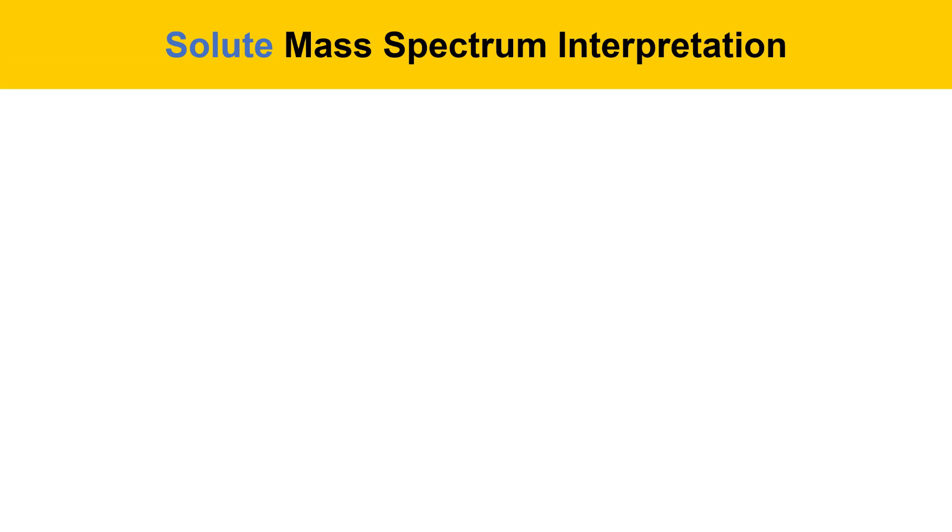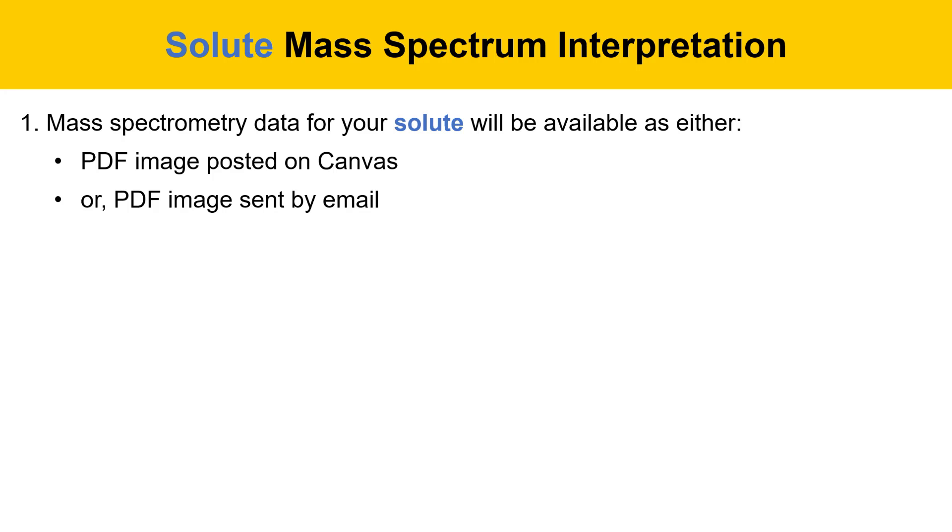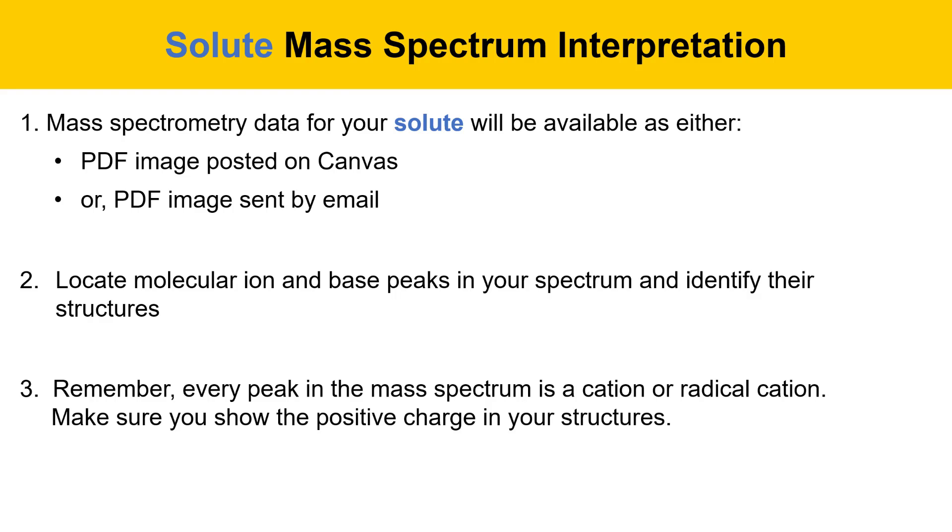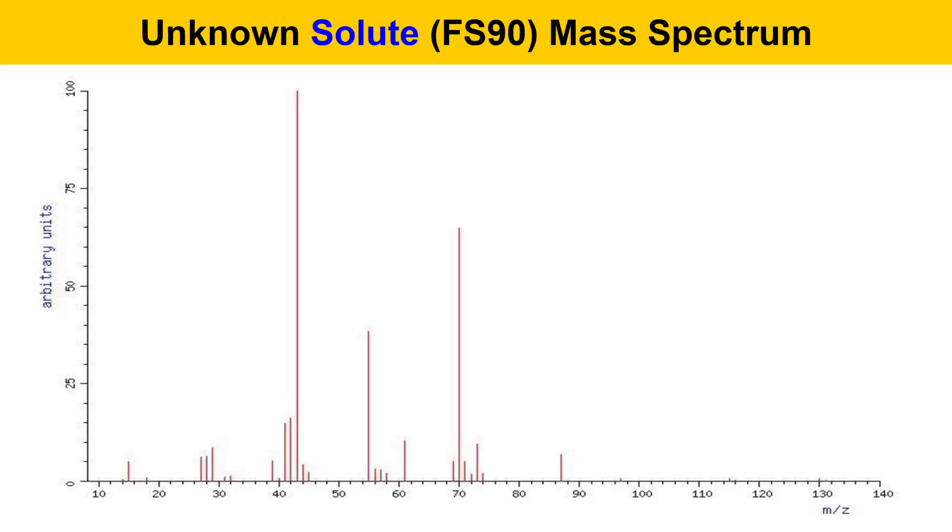Now we'll move on and talk about solute mass spectrum interpretation. Mass spectrometry data for your unknown solute will be available to you either as a PDF image posted in canvas or as a PDF image sent to you by email. When you get your unknown mass spectrum, you should locate the molecular ion and the base peaks in your spectrum and identify their structures. Remember, every peak in the mass spectrum is a cation or a radical cation, so when you draw your structures for those peaks, make sure that you show positive charges.